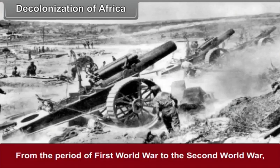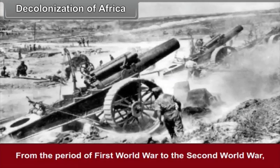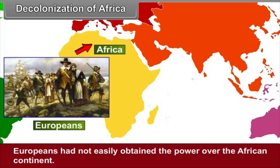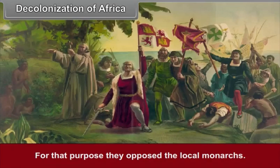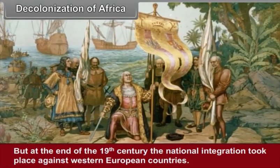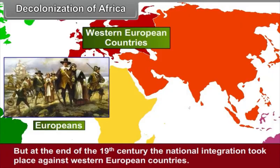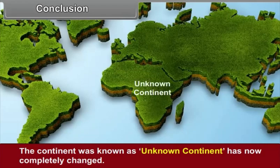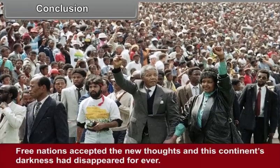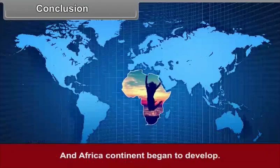Decolonization of Africa: From the period of the First World War to the Second World War, the African continent was under the power of Europeans. Europeans had not easily obtained power over the African continent — they opposed the local monarchs. But by the end of the 19th century, national integration took place against Western European countries. The continent once known as the unknown continent has now completely changed. Free nations accepted new thoughts and this continent's darkness disappeared forever. The African continent began to develop.